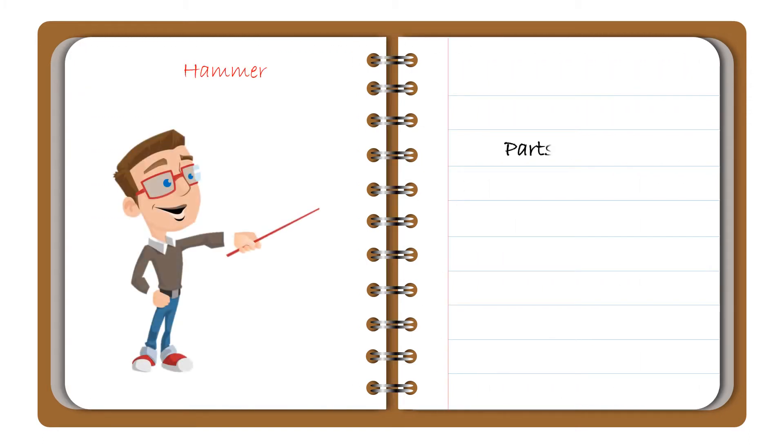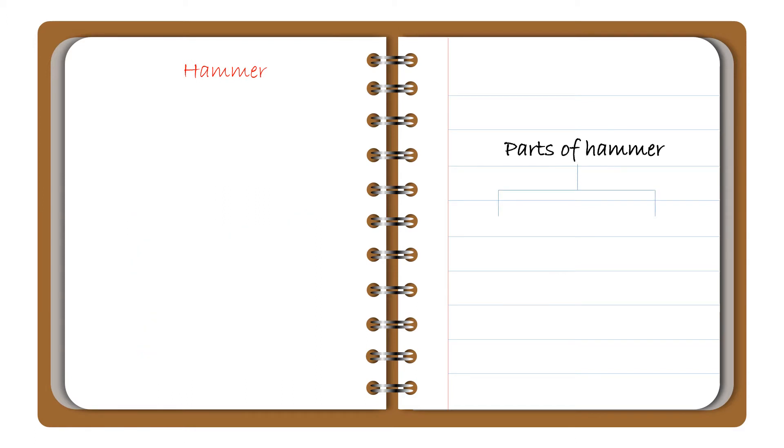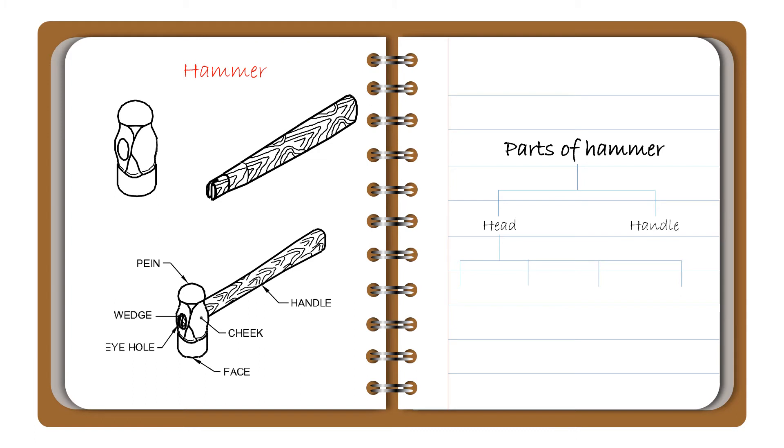Now we are going to see the major parts of the hammer. The major parts of a hammer are a head and a handle. The parts of a hammerhead are the face, pain, cheek, and eye hole.